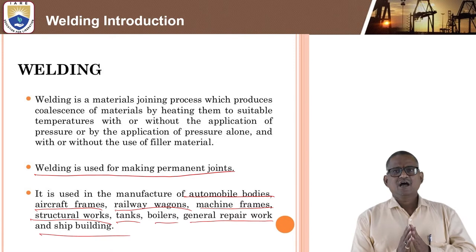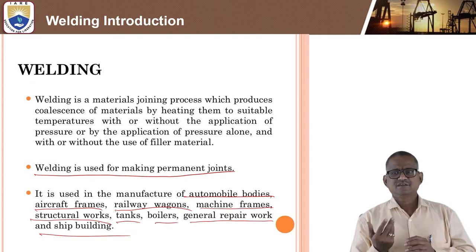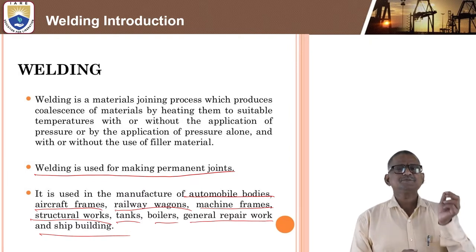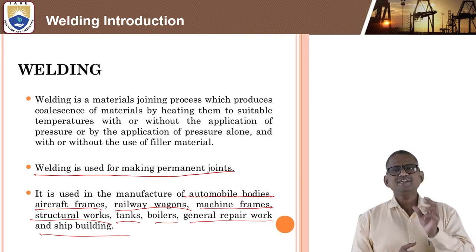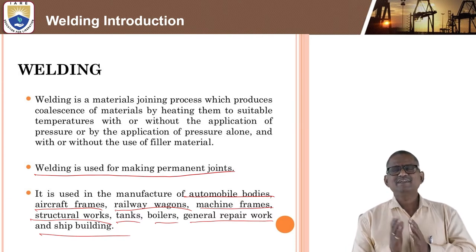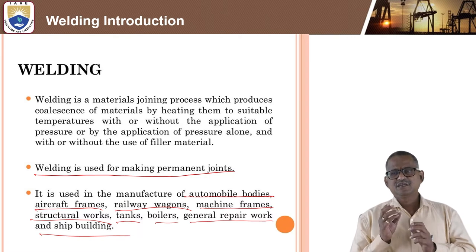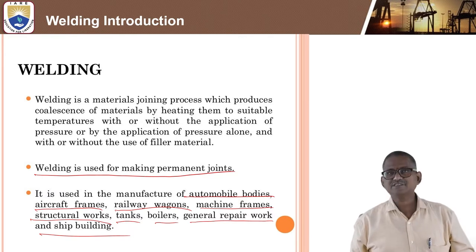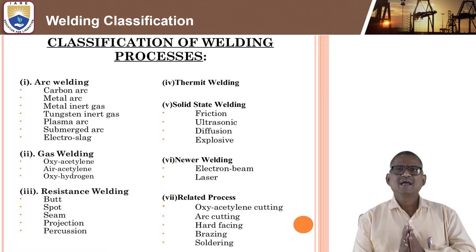In this welding process, there are many solid state and liquid state and different automatic welding applications. In every process there must be some flaws and imperfections. Let us discuss why welding defects occur, how to identify them, what are the remedies, and how to ensure a good welding process.